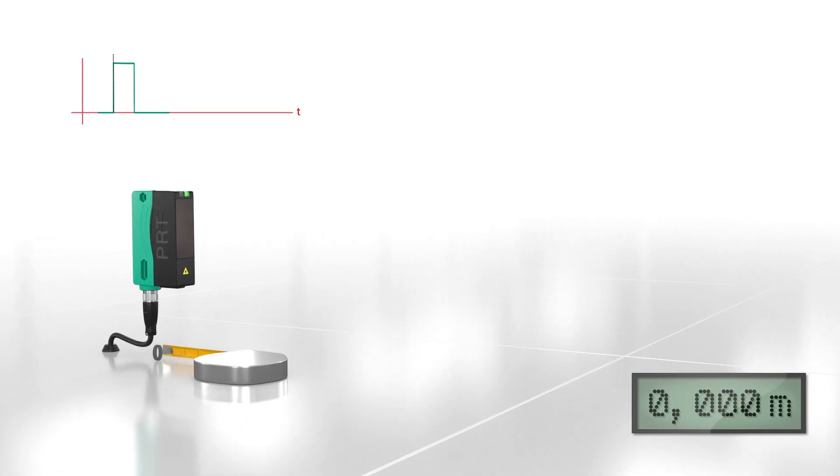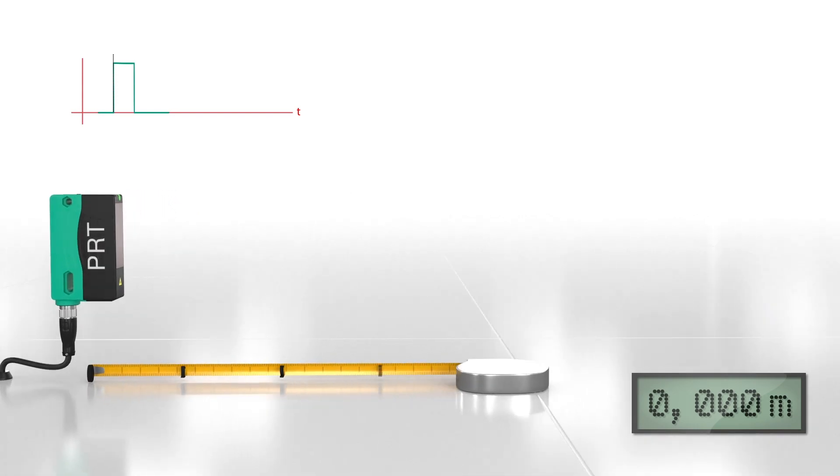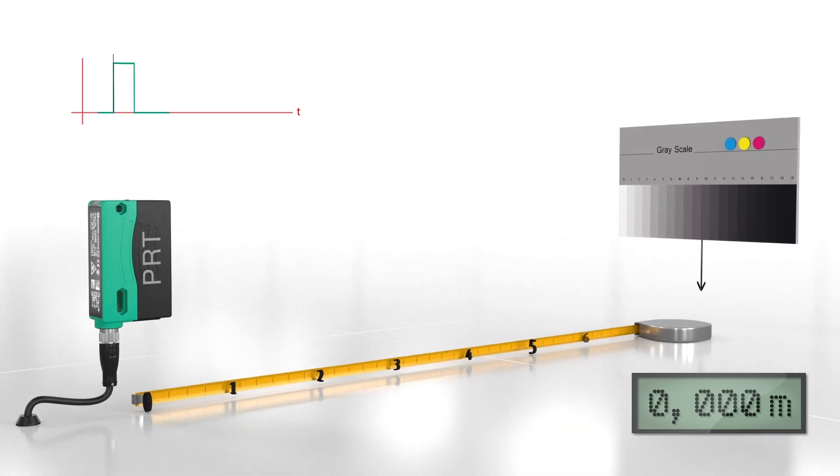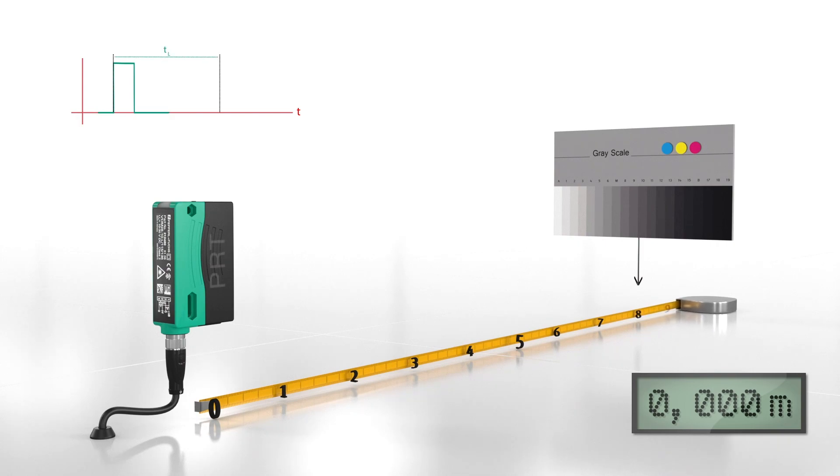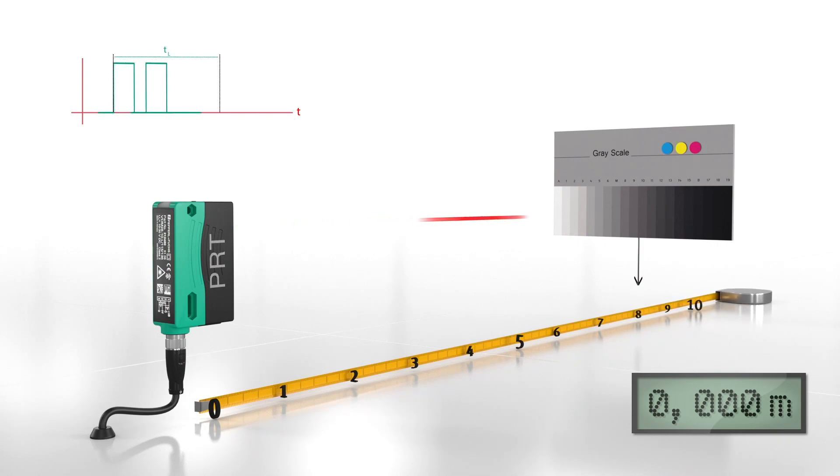This measurement method uses a powerful light source to emit short high-energy pulses that the target object reflects and a receiving element recaptures. The sensor uses the runtime of the light to calculate the exact distance to the target object.